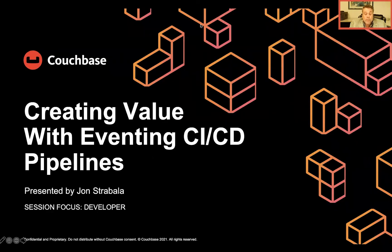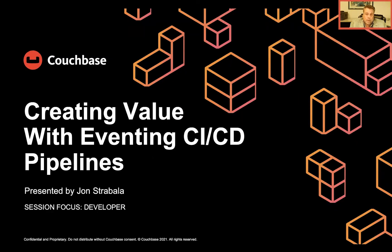This particular session is focused on the developer. Here's our brief agenda: we'll have an introduction and overview, then talk about eventing development in the UI — how to do it and some of the drawbacks. Next, a quick demo on using the UI to move eventing functions from development to production, and discuss archiving. Then we'll automate a CI/CD pipeline, walking through commands, and cap it off with a demo where we script things and put it all together.